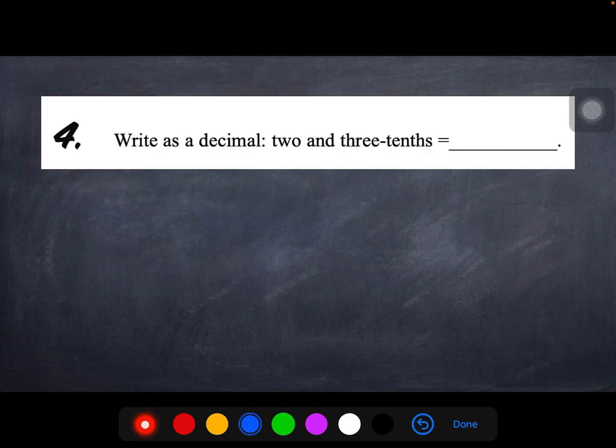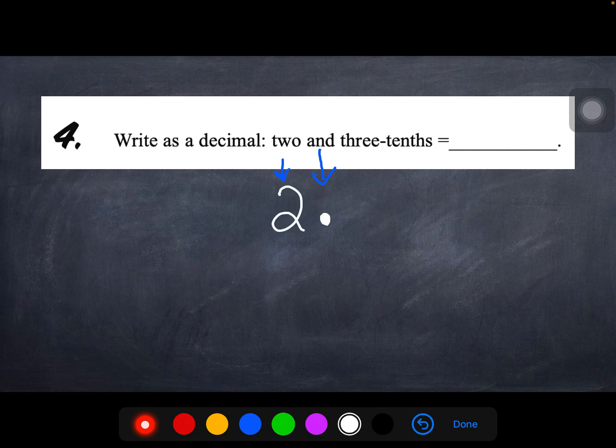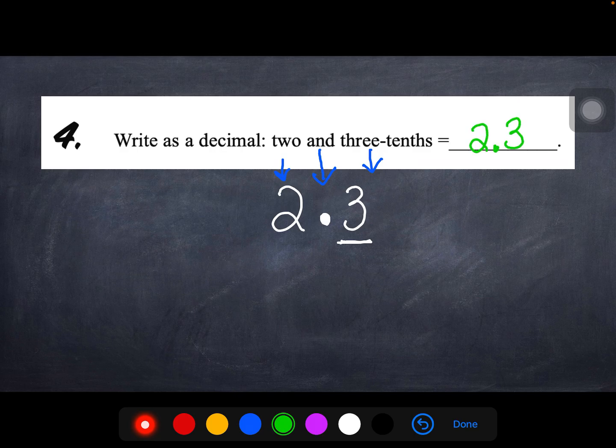Alright, let's move on. Number 4. Write as a decimal, 2 and 3 tenths. Alright, just like the word of has another meaning in Mathenese, and does as well. And hopefully you remember that it is a decimal point. So the 2, obviously, becomes a 2 whole number, and 3 tenths is going to look like this because this is the tenths place. So I'll put that in my answer, 2 and 3 tenths.